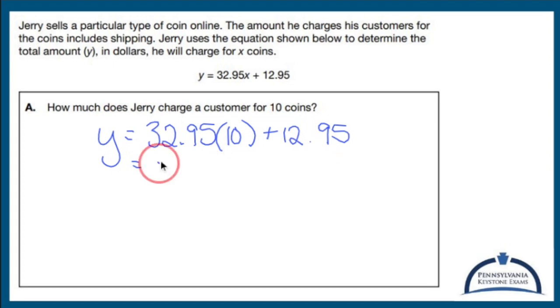This is going to end up being $329.50. Ridiculous for coins. I'm going to add 12.95 for that. Add those guys up together and you get 342.45.